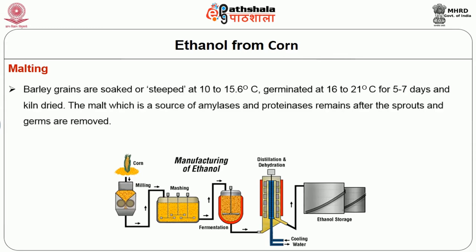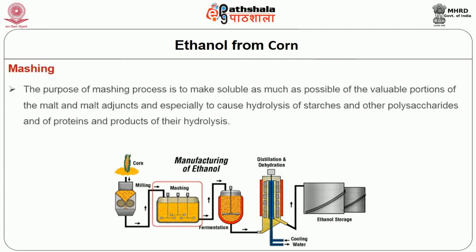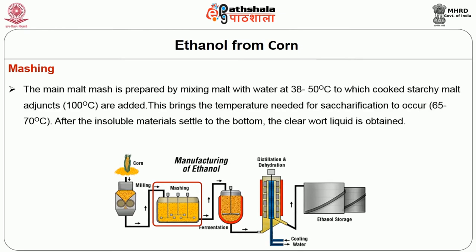The first step is malting: barley grains are soaked at 10 to 15.6 degrees centigrade, germinated at 16 to 21 degrees centigrade for 5 to 7 days, and then dried. The malt, which is a source of amylases and proteinases, remains after the sprouts and germs are removed. The second step is mashing: the purpose is to make soluble as much as possible of the valuable portions of the malt and malt adjuncts, especially to cause hydrolysis of starches and other polysaccharides and proteins.